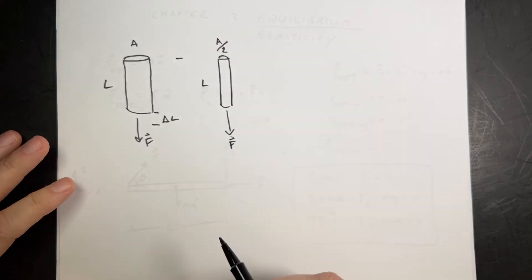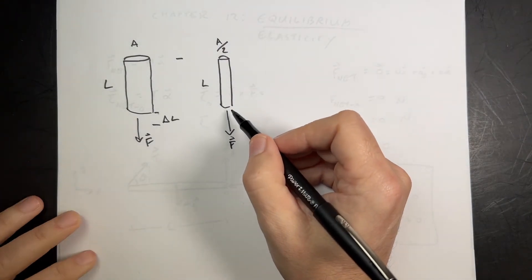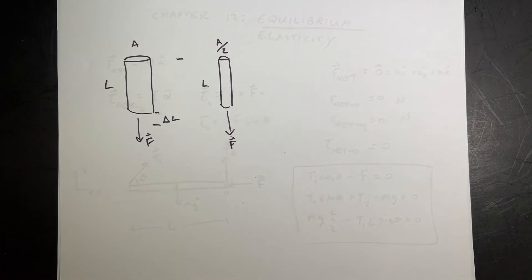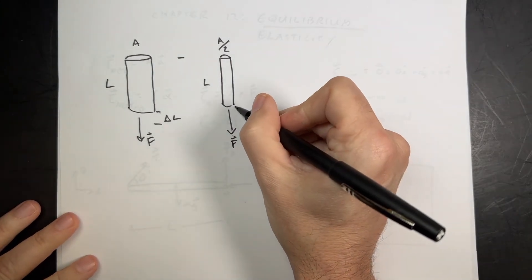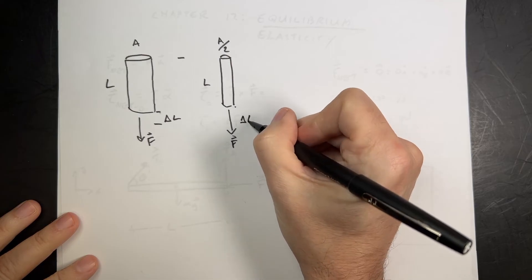What's going to happen? This one's actually going to stretch further. You know that. If you have a really thick rubber band and you pull it, it's not going to stretch as far as a thin rubber band. So, this is going to stretch a different amount delta L.